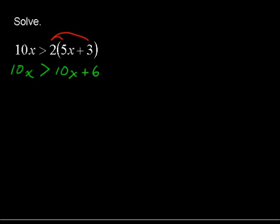But let's go through and see mathematically what happens when we try to continue to solve this inequality. We'll subtract 10x from each side to get rid of the 10x from the right-hand side. And that leaves 0 on the left-hand side and 6 on the right-hand side.